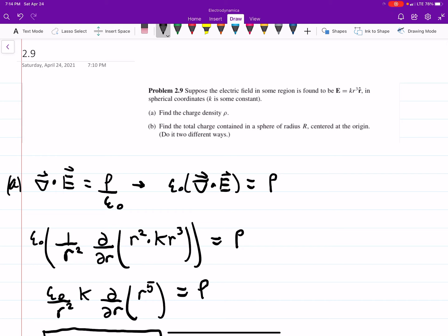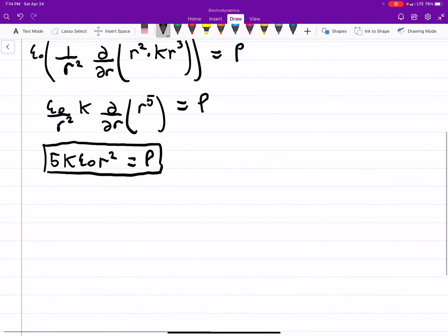Part B asks to find the total charge contained in a sphere of radius r centered at the origin. They want us to do it two ways. I'll start with the first one, which is by saying dq equals rho d tau. dq is a bit of your charge density, d tau is a volume element times rho. Rho is charge per volume, so your units work out. If we integrate both sides, we can see q equals the triple integral of rho d tau.